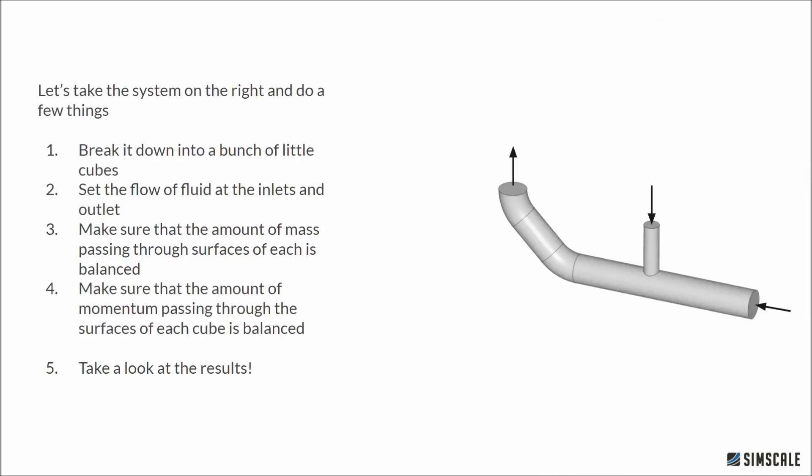Okay, so now let's look at this applied in a simulation setting. We'll take the example of a pipe as shown on the right here. It has water entering in two places and exiting in one place. First, we'll break it down into a bunch of little cubes, like we did with the river, and then we'll tell the computer where we want water to enter and exit. Then after that, we'll make sure the amount of mass passing through our cube sides is balanced, and then we'll make sure the amount of momentum passing through the cube sides is balanced. And we'll do this for all the cubes.